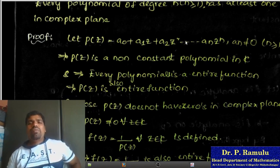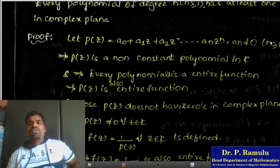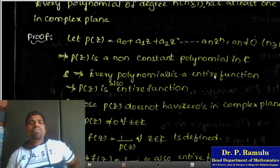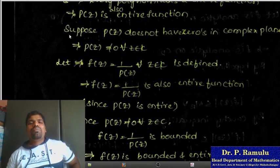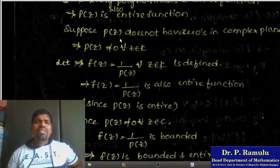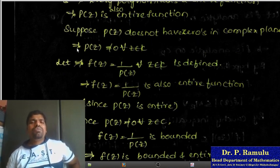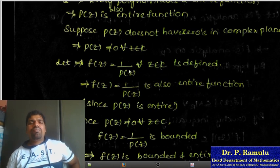Here n ≥ 1 means it is a non-constant polynomial. A constant polynomial does not have zeros. Proof. Let p(z) = a₀ + a₁z + a₂z² + ... + aₙzⁿ with aₙ ≠ 0 and n ≥ 1. Since p(z) is a non-constant polynomial in C, every polynomial is an entire function, so p(z) is also an entire function. Suppose p(z) does not have zeros — I want to prove by contradiction.